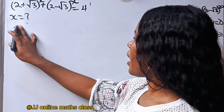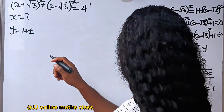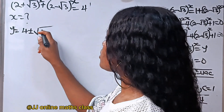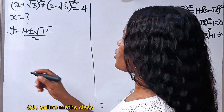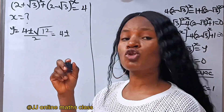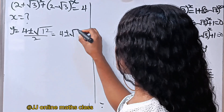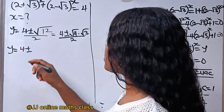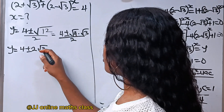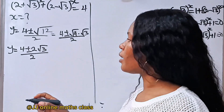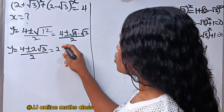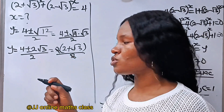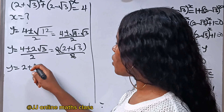So y is equal to 4 plus or minus square root of 16 minus 4, which gives 12, divided by 2. Now root 12 is the same as root 4 times root 3. So we have 4 plus or minus root 4 times root 3, divided by 2. Square root of 4 is 2, so we have 4 plus or minus 2 root 3, divided by 2. Factorizing 2 out gives 2 brackets 2 plus or minus root 3, divided by 2. The 2s cancel, leaving y equal to 2 plus or minus root 3.